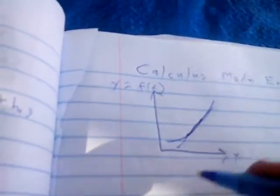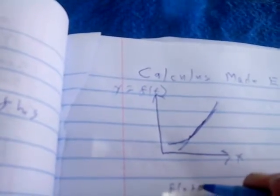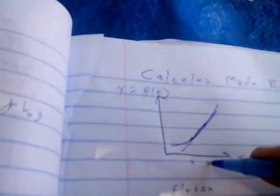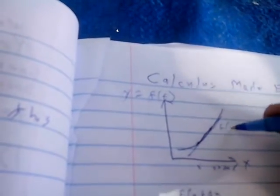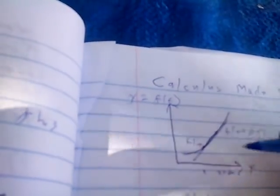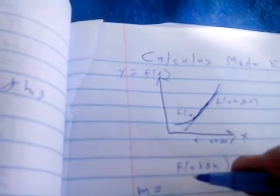And just by the definition of a slope, you could say m equals function of x plus delta x, which is this point is x. This one's x plus delta x. And this one's function of x plus delta x. And this one's just function of x. Minus function of x.